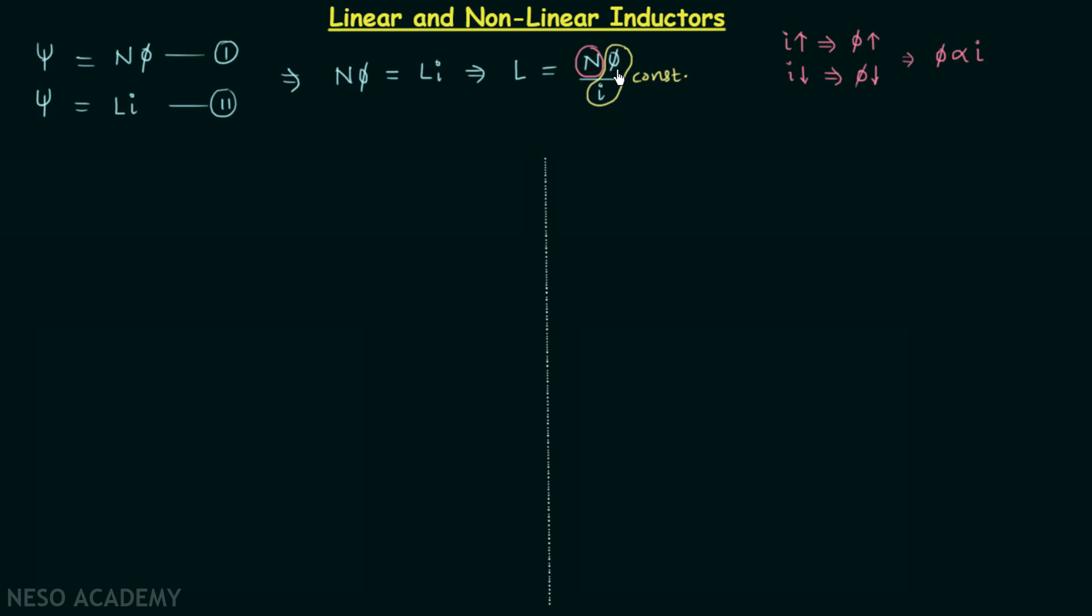When we multiply a constant with another constant, we are going to get a constant. So L is equal to a constant, and this type of inductor we call a linear inductor.